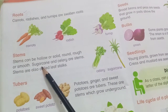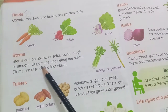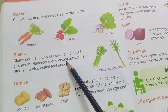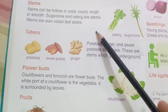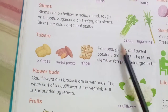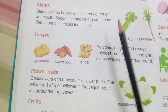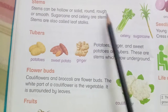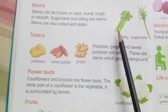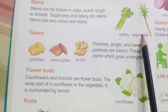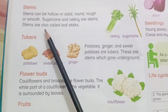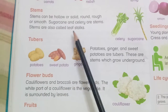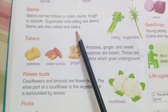Sugar cane and celery are stems. Stems are also called leaf stalks.